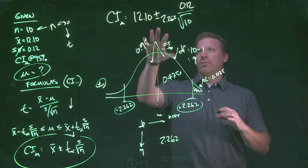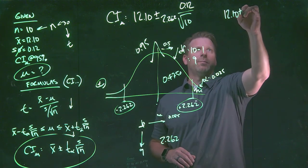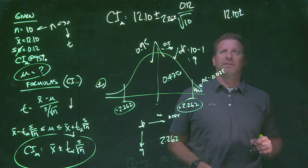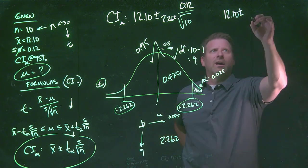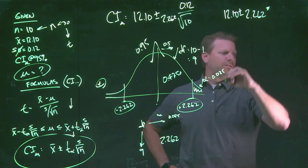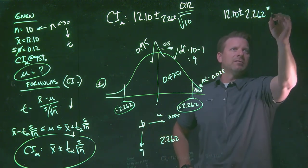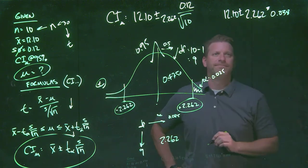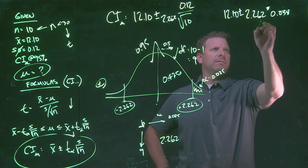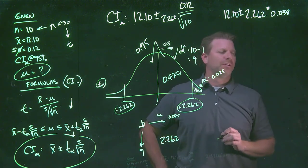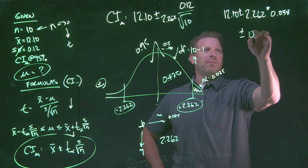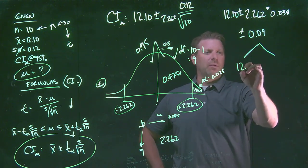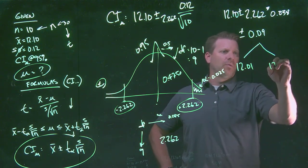In terms of starting to work through this specific value, we've got 12.10 plus and minus. If we take the square root of 10 first, take that value, divide the 0.12 by that answer, we come up 2.262 times, it ends up being somewhere right around 0.038. If I then multiply the 2.262 times the 0.038, I'm going to end up somewhere right around 0.09. So this tells us that our interval exists between 12.01 and 12.19.